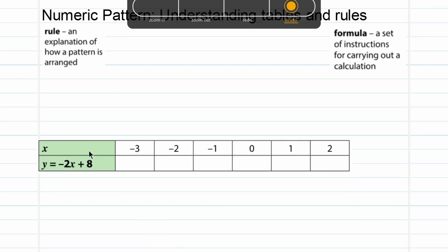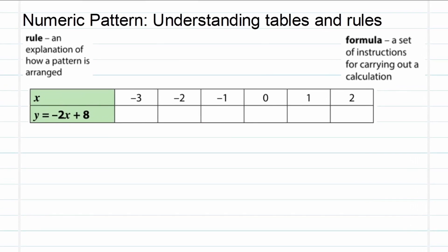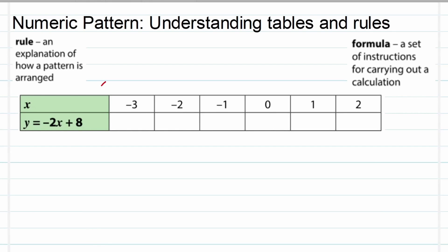To understand this fully, we really need to understand what is x and what is y. First of all, x is known as our input value—that's the value we choose to put into the formula. In this table it's -3, -2, -1, 0, 1, and 2. Once we've applied the formula, then we will get an output value, in this case y. That will be the answer of our calculations—the final answer of our calculation.